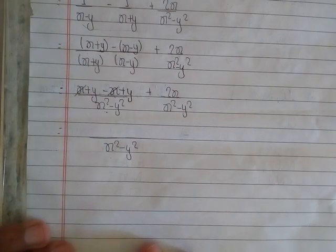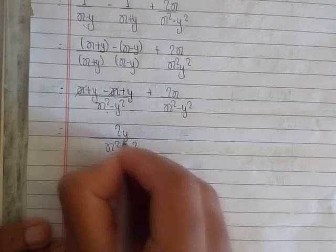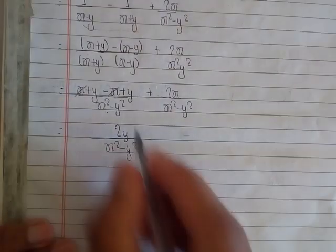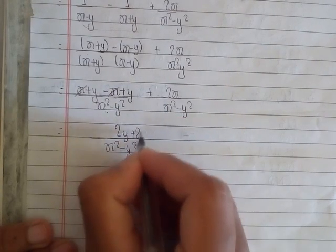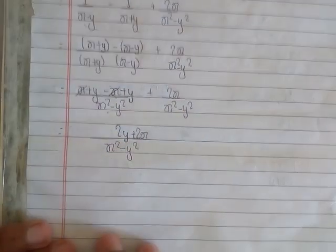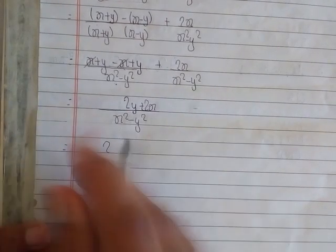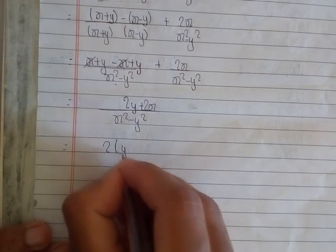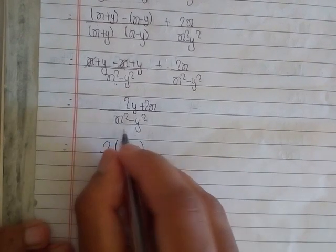We have done up to this much. Then we'll simply add 2x also here because we have to take this common. In the next step, we'll write 2 as common for these terms, and we'll write (y+x).